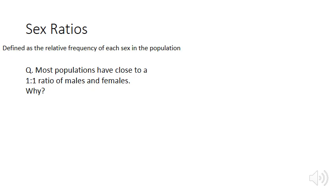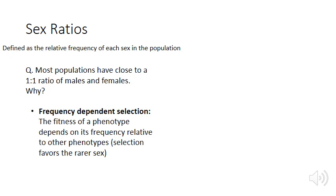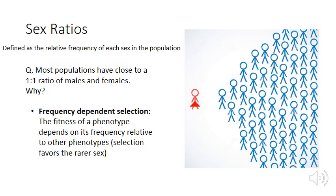The final element of population structure is sex ratio, defined as the relative frequency of each sex in the population. Most populations have a roughly equal sex ratio of one to one, males to females. The most common explanation for this is frequency-dependent selection — the idea that the fitness of a phenotype depends on its frequency relative to other phenotypes, so selection favours the rarer sex.